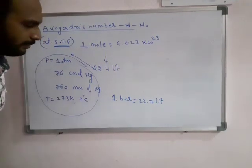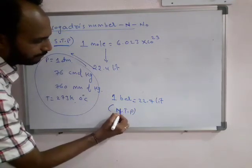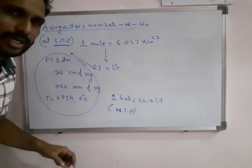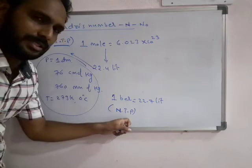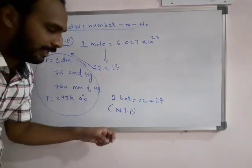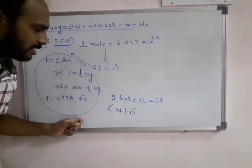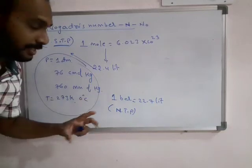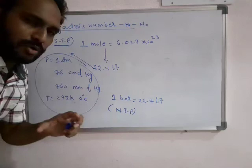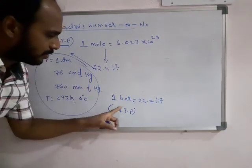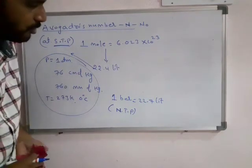When you take the bar condition, that is NTP — normal temperature and pressure. We generally do not use NTP conditions in problems. In NTP condition, the difference is that the pressure is taken in terms of bar, that is 1 bar, which is 1.01 atmospheres differential. On that basis, 1 bar requires 22.7 liters. But in our problems, we always use only STP.